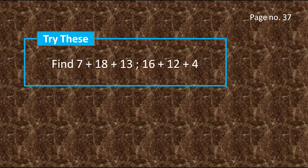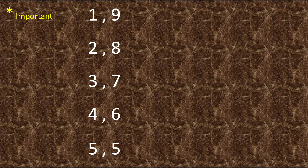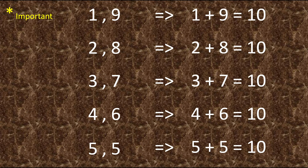Those combinations of numbers are 1 & 9, 2 & 8, 3 & 7, 4 & 6, and 5 & 5. These numbers need to be on the unit place to make up a multiple of 10. For example, when one of the numbers has 1 on its unit place, then the other number must have 9 on its unit place to make up a multiple of 10.